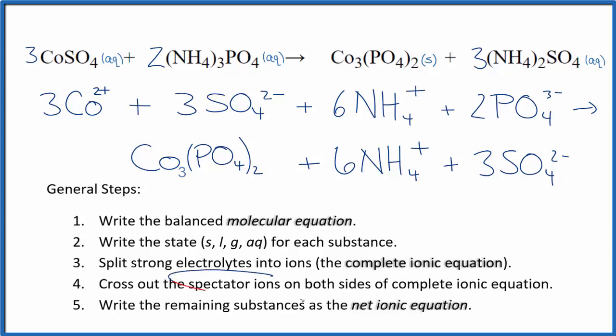Now we cross out spectator ions. They're on both sides. So I can see in the reactants there are three sulfate ions right here, and again in the products. So these are spectator ions. We get rid of those.